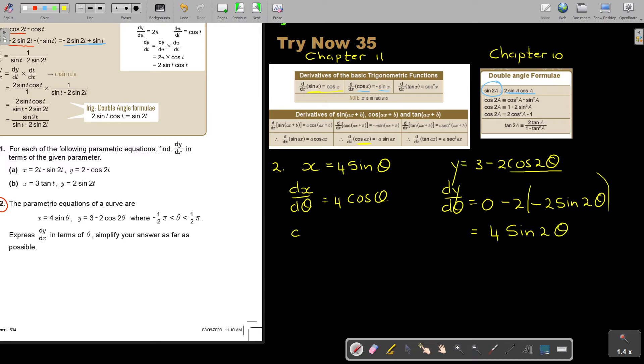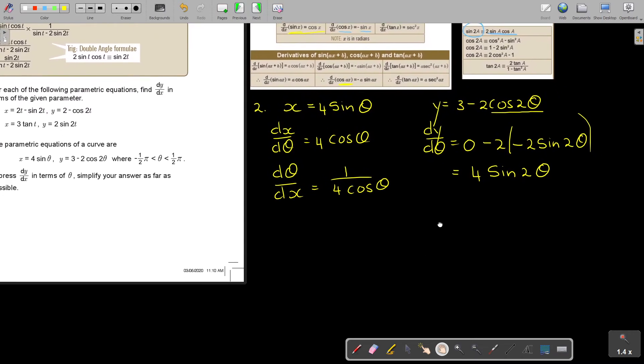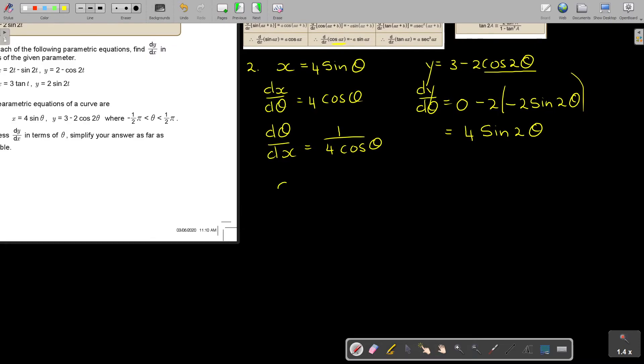If I swap this around, so I have d theta over dx, it's 1 over 4 cos theta. And now I'm going to multiply. And then I'm going to say dy over dx. And I'm basically just going to multiply that too. So it's going to be, remember, this is over 1. So it's 4 sin 2 theta over 4 cos theta.